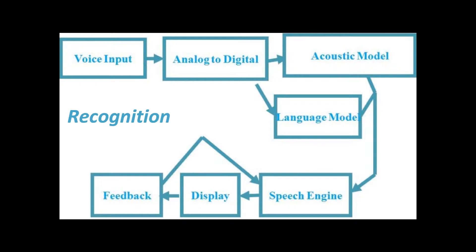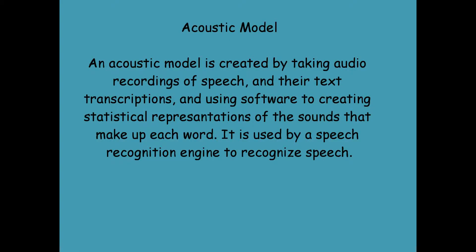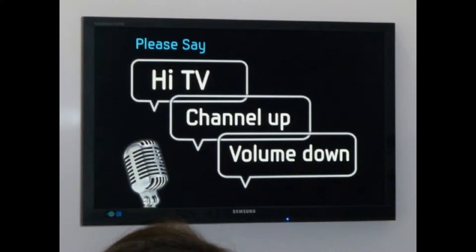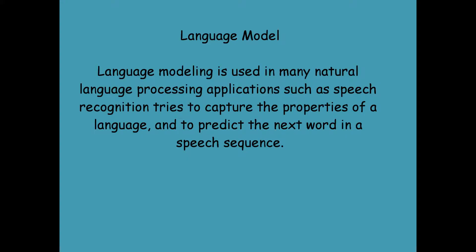Here is the diagram of voice recognition. We are going to analyze the acoustic model and the language model. An acoustic model is created by taking audio recordings of speech and their text transcriptions, and using software to create statistical representations of the sounds that make up each word. It is used by a speech recognition engine to recognize speech. A language model is used in many natural language processing applications such as speech recognition, and tries to capture the properties of a language and to predict the next word in a speech sequence.